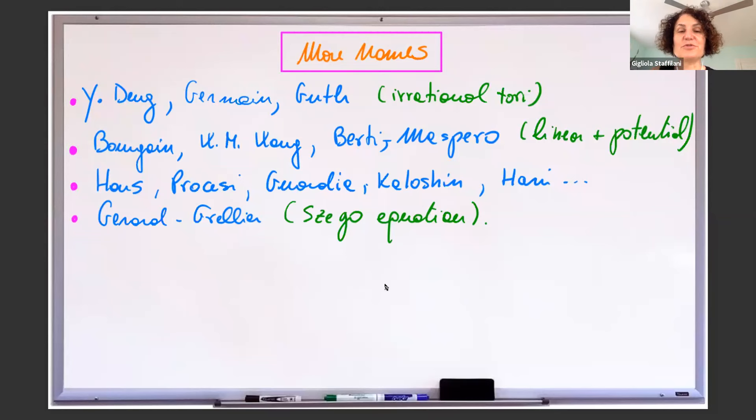I'll stop here. I didn't manage to get to the symplectic geometry problem or the probabilistic approach, but I'm happy to give references if anyone would like to see that part. Thank you.